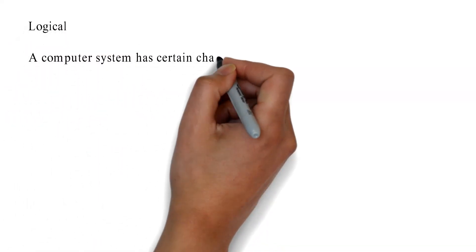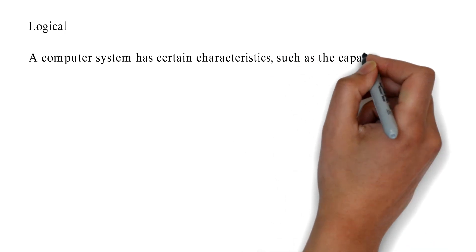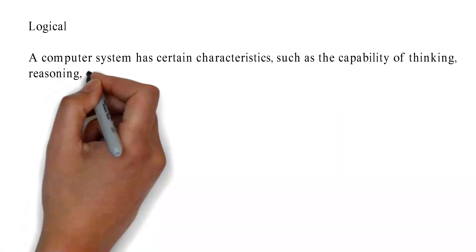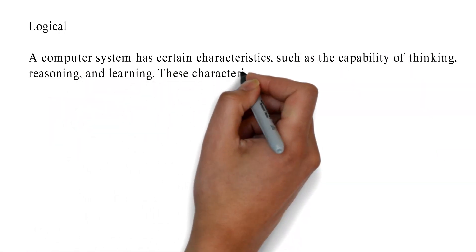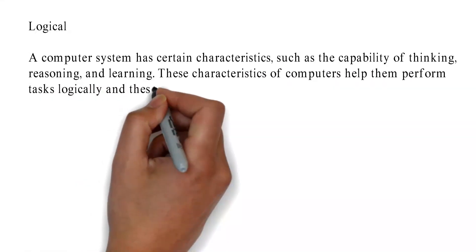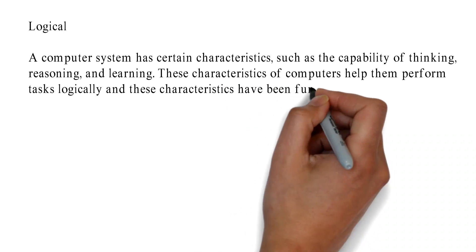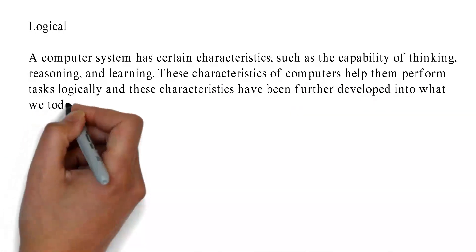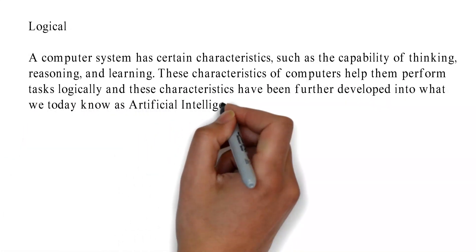Logical: A computer system has certain characteristics such as the capability of thinking, reasoning, and learning. These characteristics of computers help them perform tasks logically, and these characteristics have been further developed into what we today know as artificial intelligence.